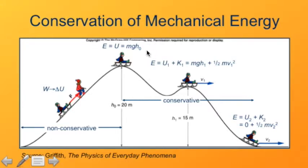At the top of the hill, the energy is all potential energy. Kinetic energy is zero. So that's just mgh zero, h zero being the 20 meters. That's the height of the hill.